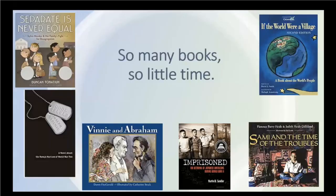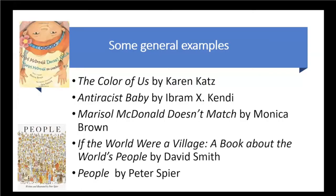So many books, so little time. Some general examples: The Color of Us showcases the many shades of skin — not just black, white, or brown. Skin may be the color of cinnamon, peanut butter, chocolate, honey, or even coffee. This book helps readers associate positive things with skin color and gives an opportunity to perhaps introduce multicultural crayons, pencils, or markers.